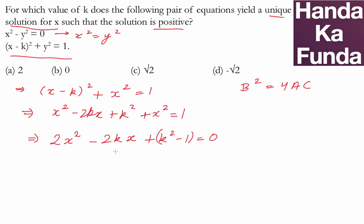So, let's make that. What is b? b is -2k. So, b² will be 4k² and 4ac. 4ac will be 4 into 2 or 8 times (k² - 1).